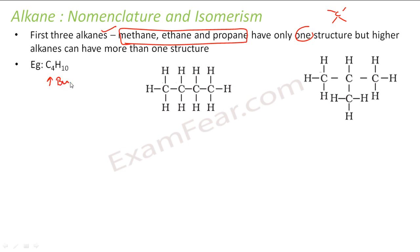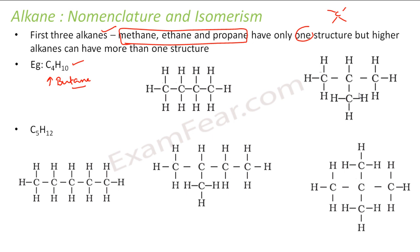For butane, you can draw two structures: either a straight chain or a branched one. In both cases you have 4 carbons and 10 hydrogens — C4H10. For pentane (C5H12), there are three structures: you can have a straight chain or two different branched arrangements, each with 5 carbons and 12 hydrogens. As you go higher, the number of isomers increases.